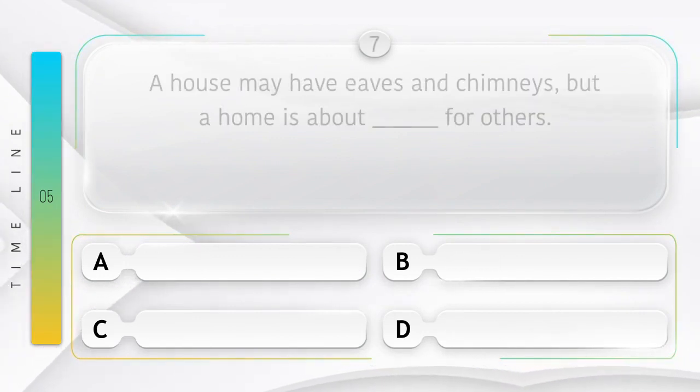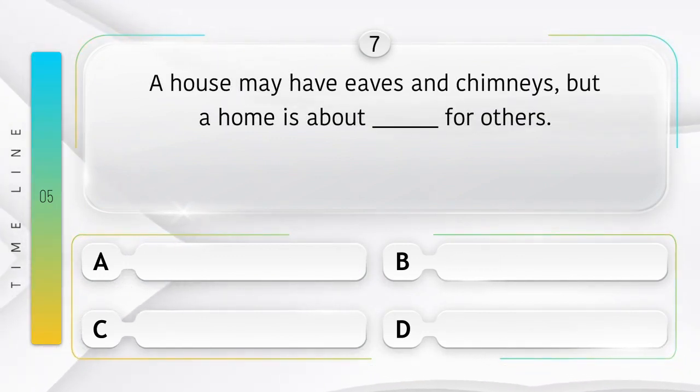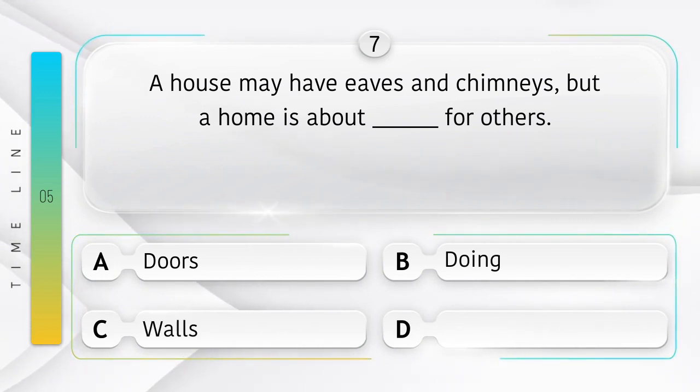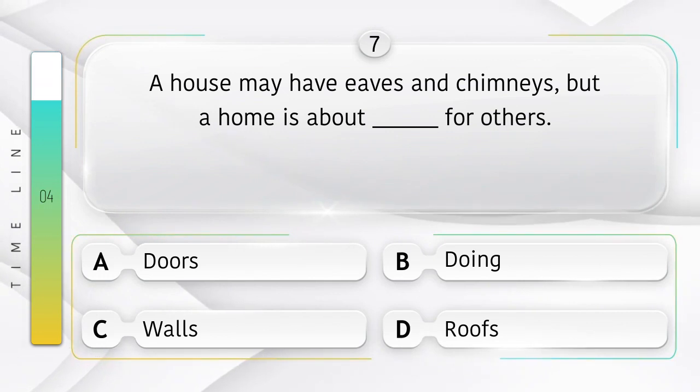A house may have eaves and chimneys, but a home is about blank for others. Options are A. Doors, B. Doing, C. Walls, D. Roofs. Answer is option A, Doors.